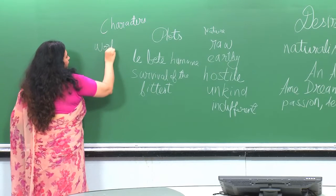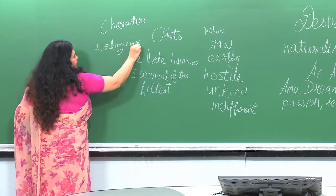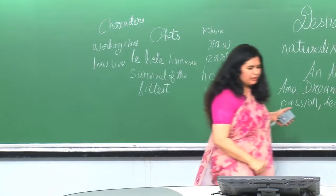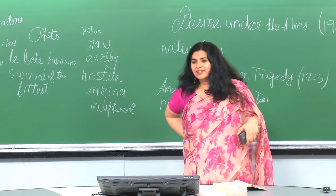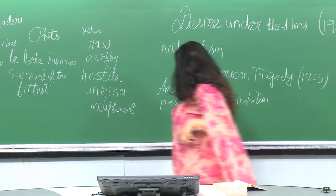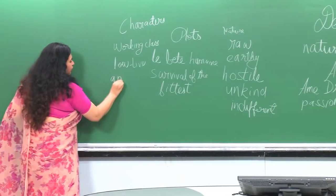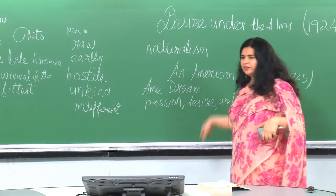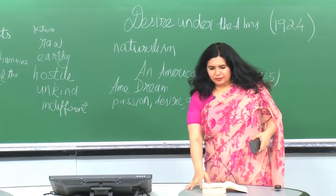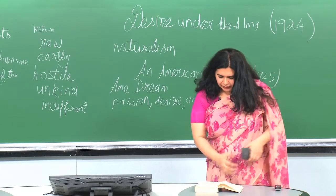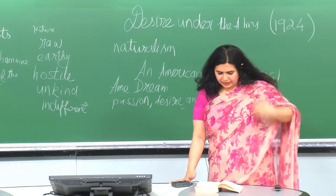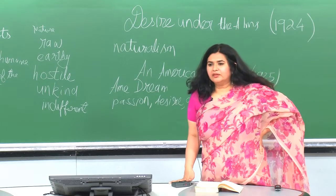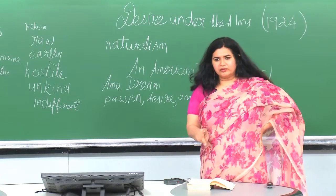Working-class characters are generally low-lives and uneducated — that is how Dreiser presents them. Morality among such characters is unstable. O'Neill was a playwright who wrote at the beginning of the 20th century. Along with Arthur Miller and Tennessee Williams, he is one of the three major American dramatists of the 20th century.